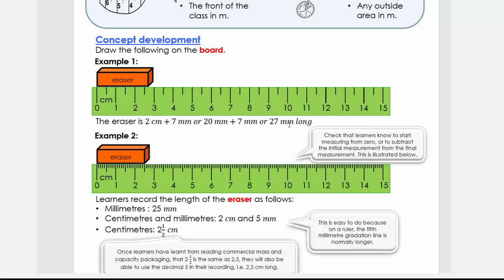Then the next one is we're going to use a ruler where we can see the millimeters. So check that the learners know to start measuring from zero or to subtract the initial measurement from the final measurement.